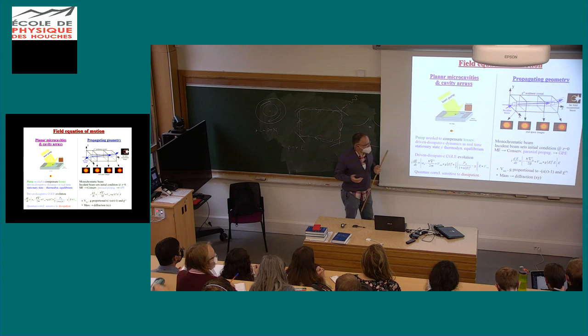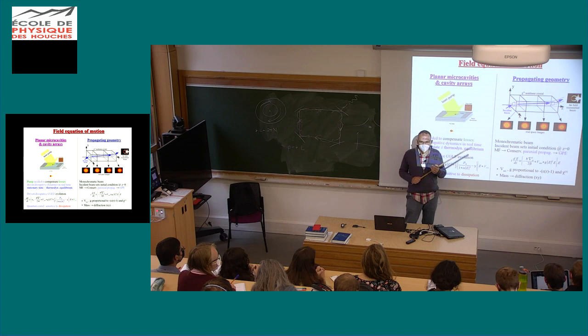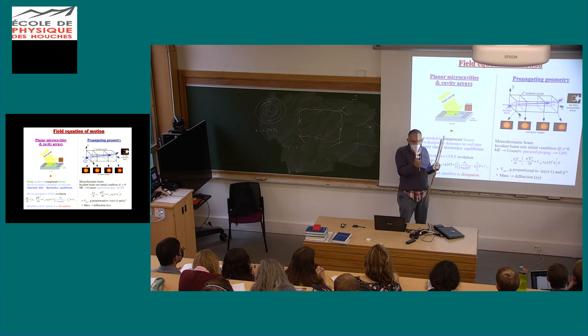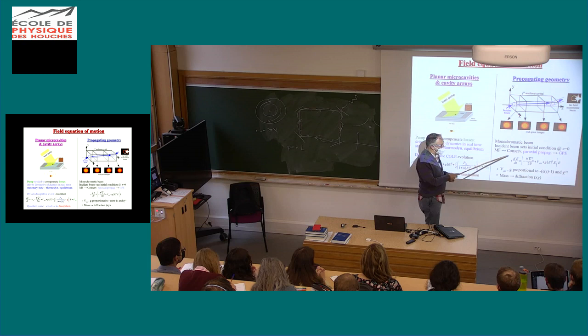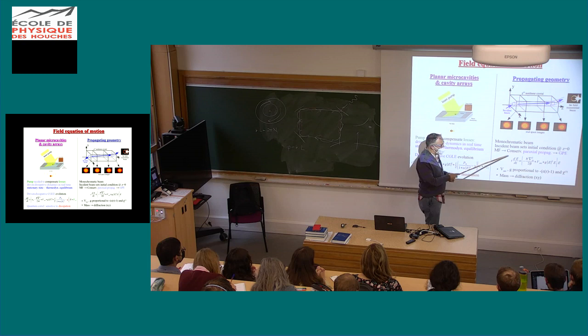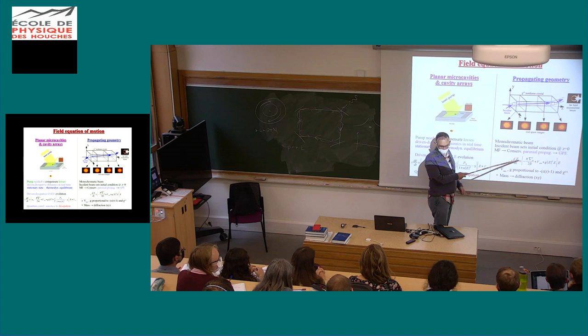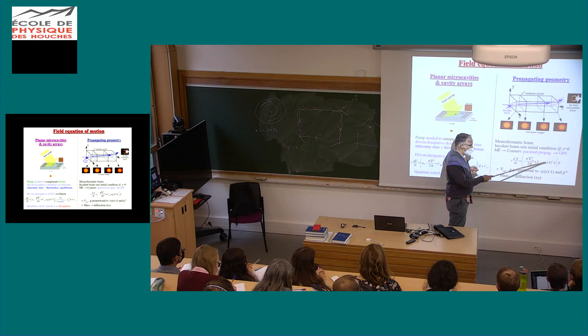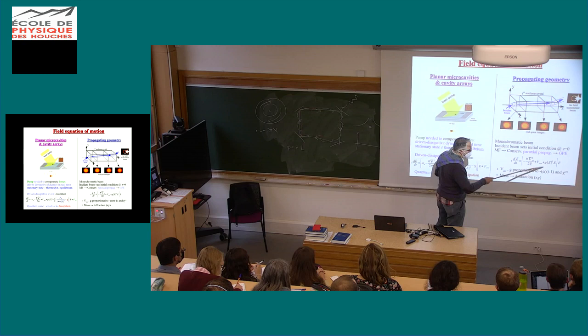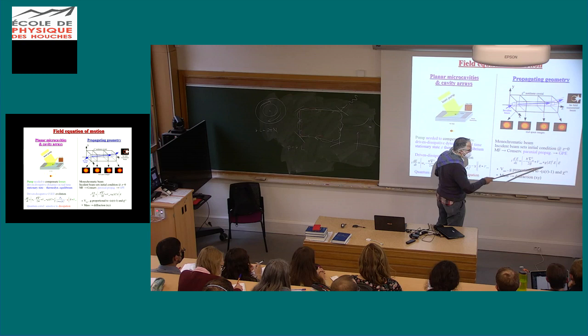You know from your undergraduate studies that propagation of light in a paraxial approximation — when light goes mostly in one direction with a small angle compared to the propagation direction — can be described by an equation of this kind. Z is the direction of propagation. There is a term describing diffraction along the xy-plane, an optical non-linearity term, and V is an external potential proportional to the local pattern of refractive index.